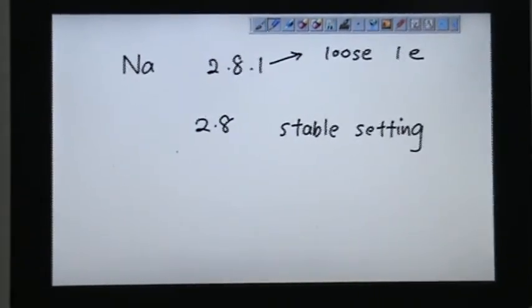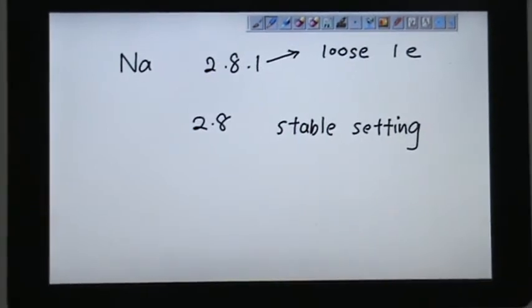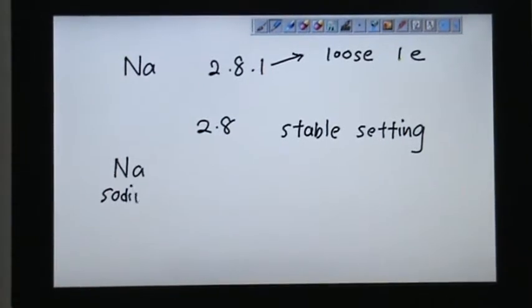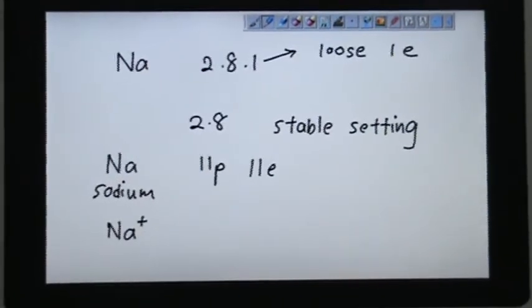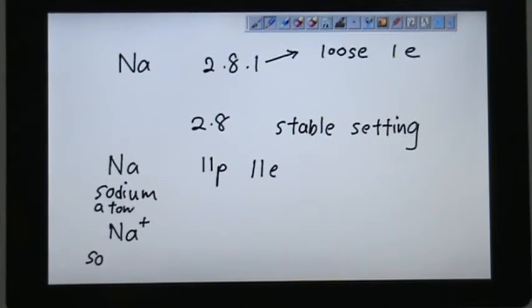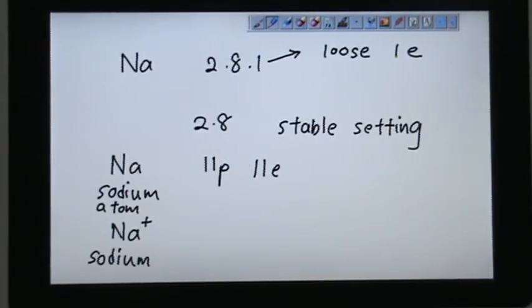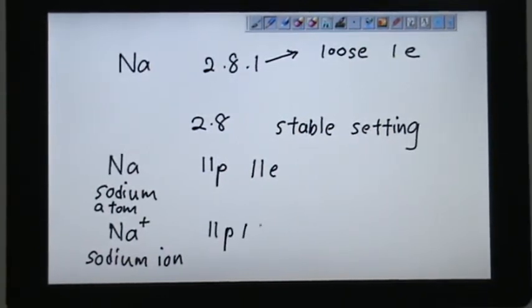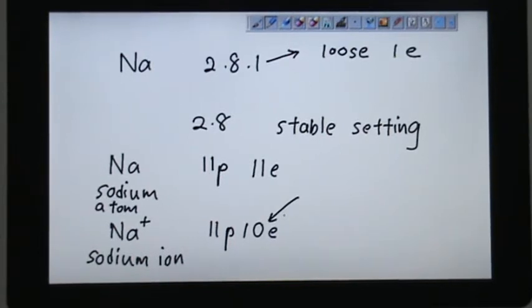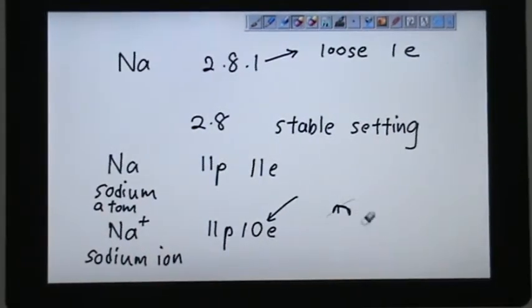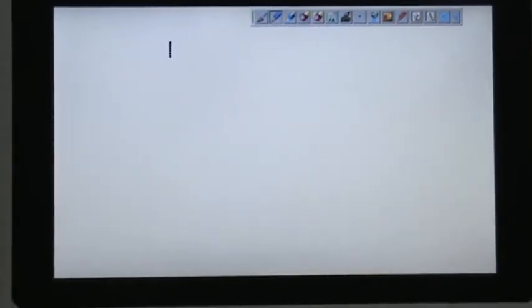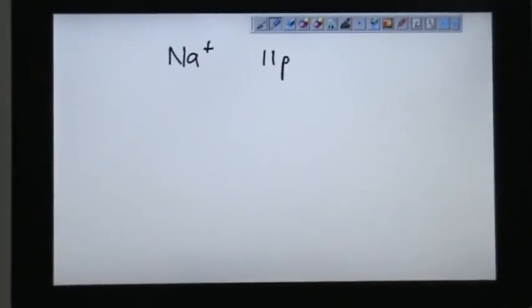To put it in simpler terms, what we are trying to say is sodium atom used to have 11 protons, 11 electrons. Now we are trying to say the sodium becomes sodium ion. Just now it was sodium atom, now it is sodium ion. And it has lost 1 electron. You see the number, it has become different. 1 electron less. It has 11 protons and 10 electrons.